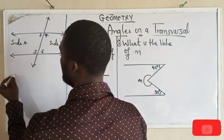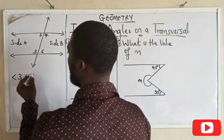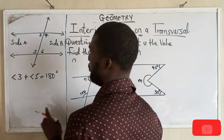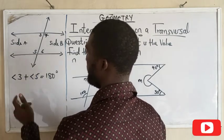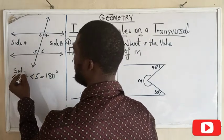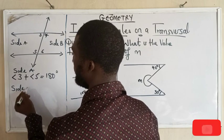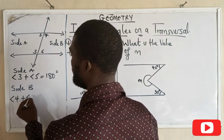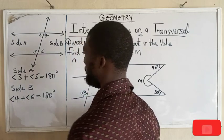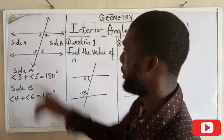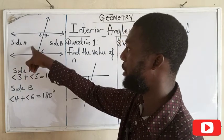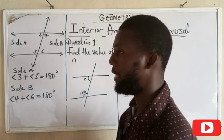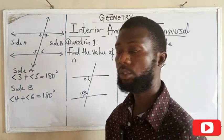In this case you can say angle three plus angle five equals 180 degrees, which is on side A. Then on side B we say angle four plus angle six equals 180 degrees. The sum of interior angles on one side of a transversal equals 180, or we can say it is supplementary.